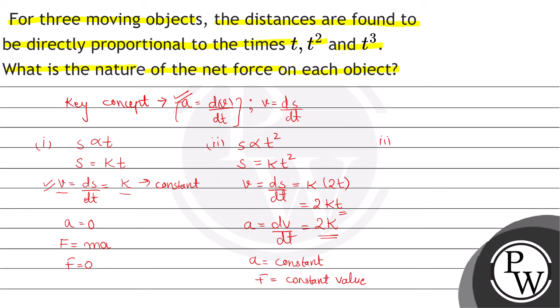In the third part, s is directly proportional to t cube, so s = kt³. Then v = ds over dt = 3kt². For acceleration, dv over dt = 6kt.